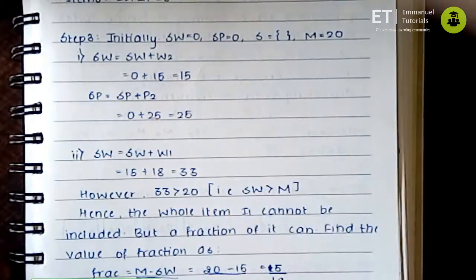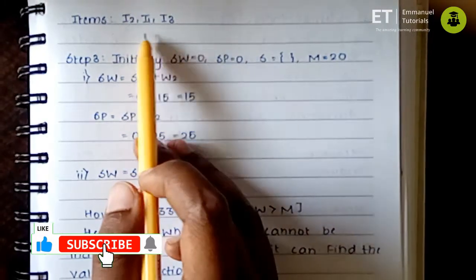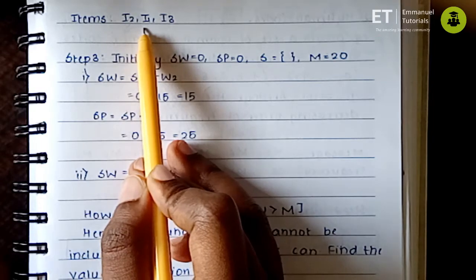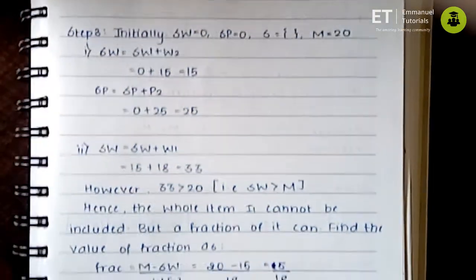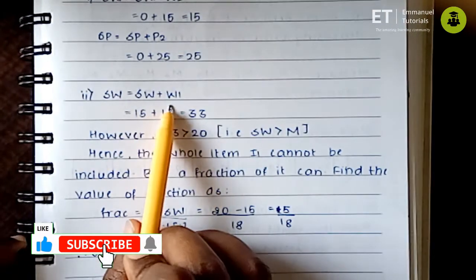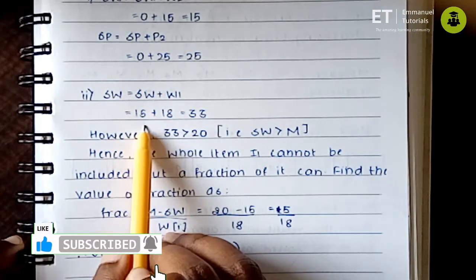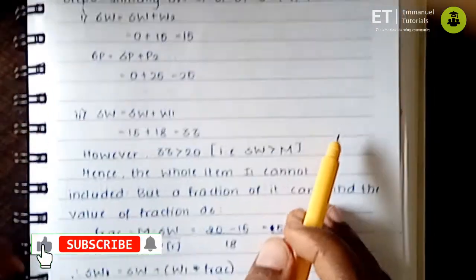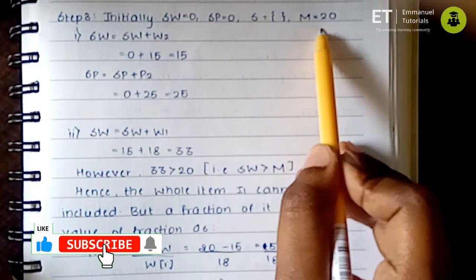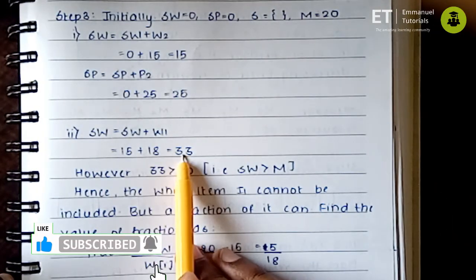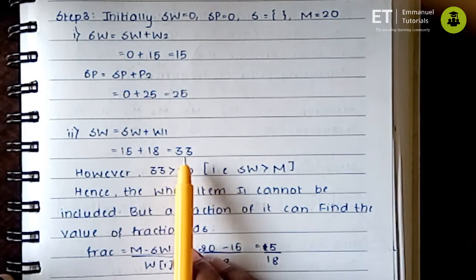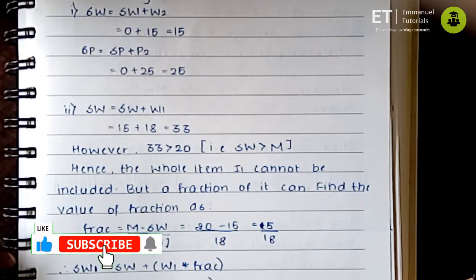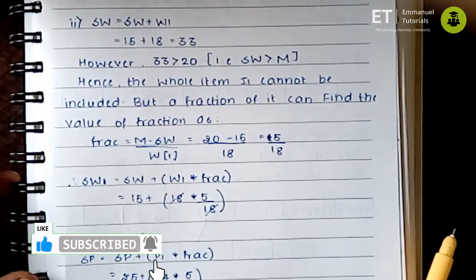We proceed with the next item, I1. Adding its weight to the current sack weight gives 15 plus 18, which equals 33. But the capacity of the knapsack is 20, so this item cannot be included as a whole. However, since we are solving the fractional knapsack problem, we can take a part of the item.